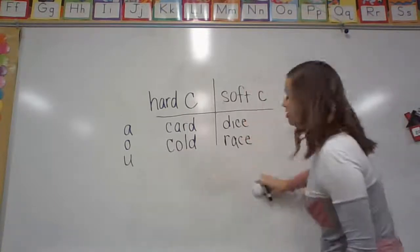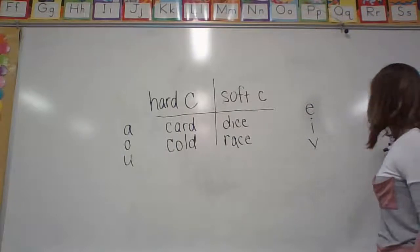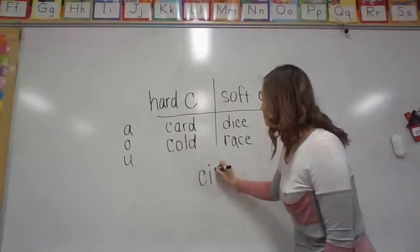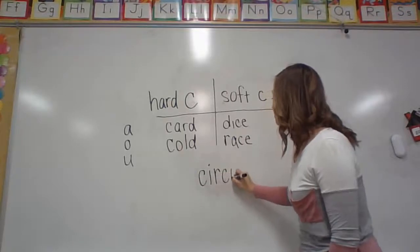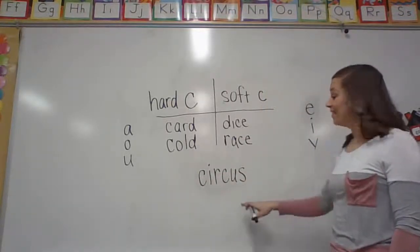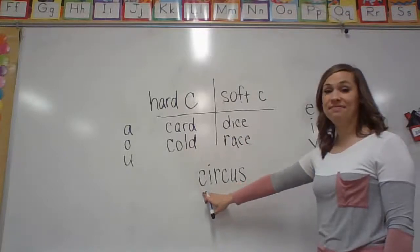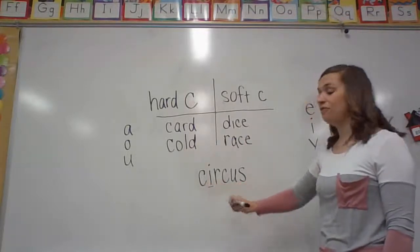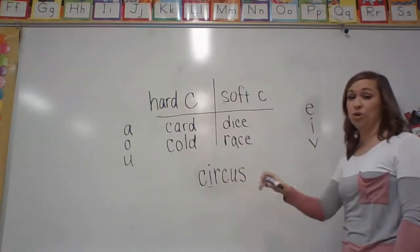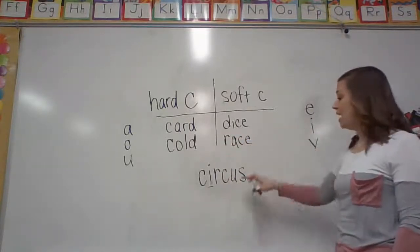All right. This time I'm going to give you a hard word that's two syllables. Here we go. And it's got a bossy R in it. Now you find your C. And you look what letter comes after it. Is it an E, I, or Y? Or is it an A, O, or U? It's an I.